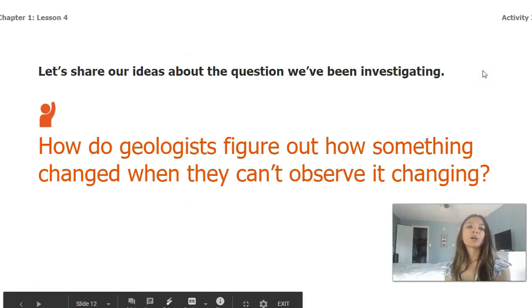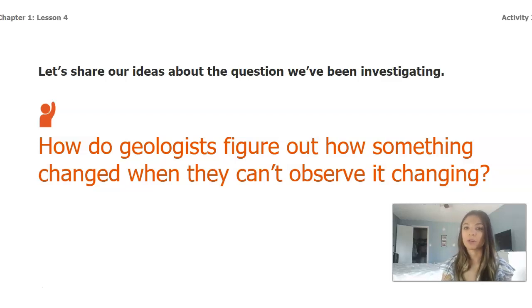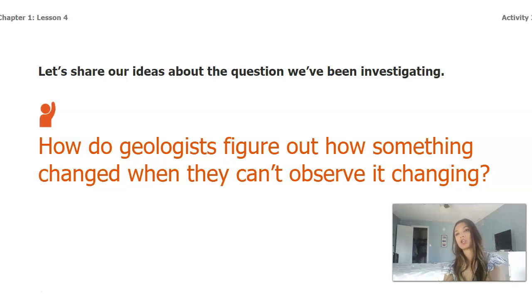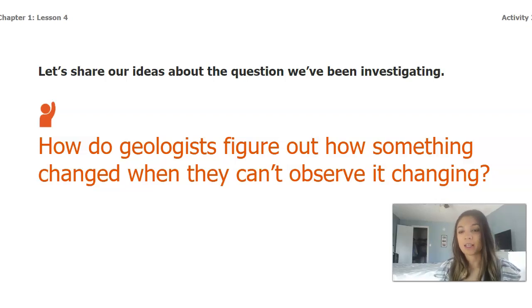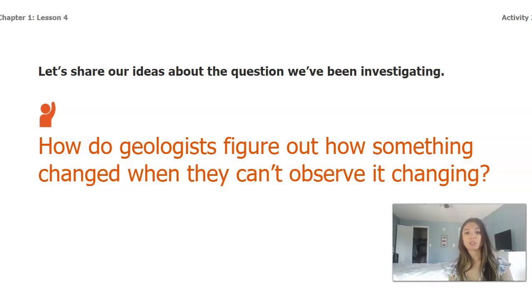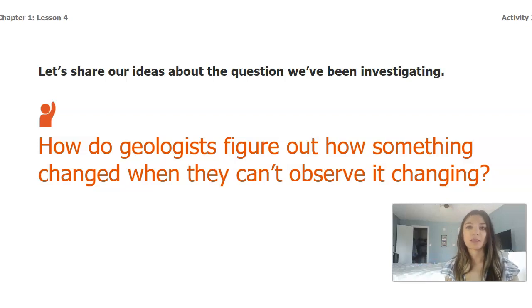Okay, so we're going to be sharing ideas about the question that we've been investigating: How do geologists figure out how something changed when they cannot observe it changing? Remembering back to our story about the different landforms — even though we might not always be able to see something changing quickly, things do change slowly over time. Whether that is wind causing rocks from a mountain to slowly start blowing off, which will change the shape of the mountain, or thinking about our sand — over time the rocks might start off sharper, and as the waves keep going, it's going to make that sand become more rounded, which gives us evidence that it is older sand.